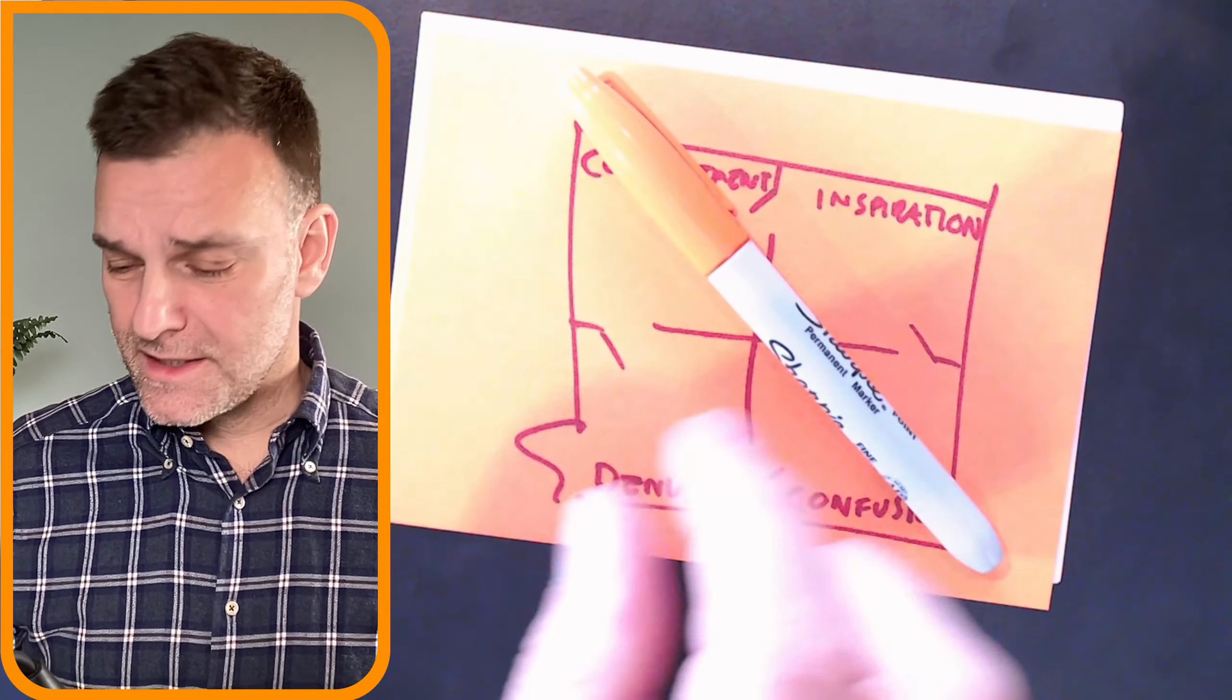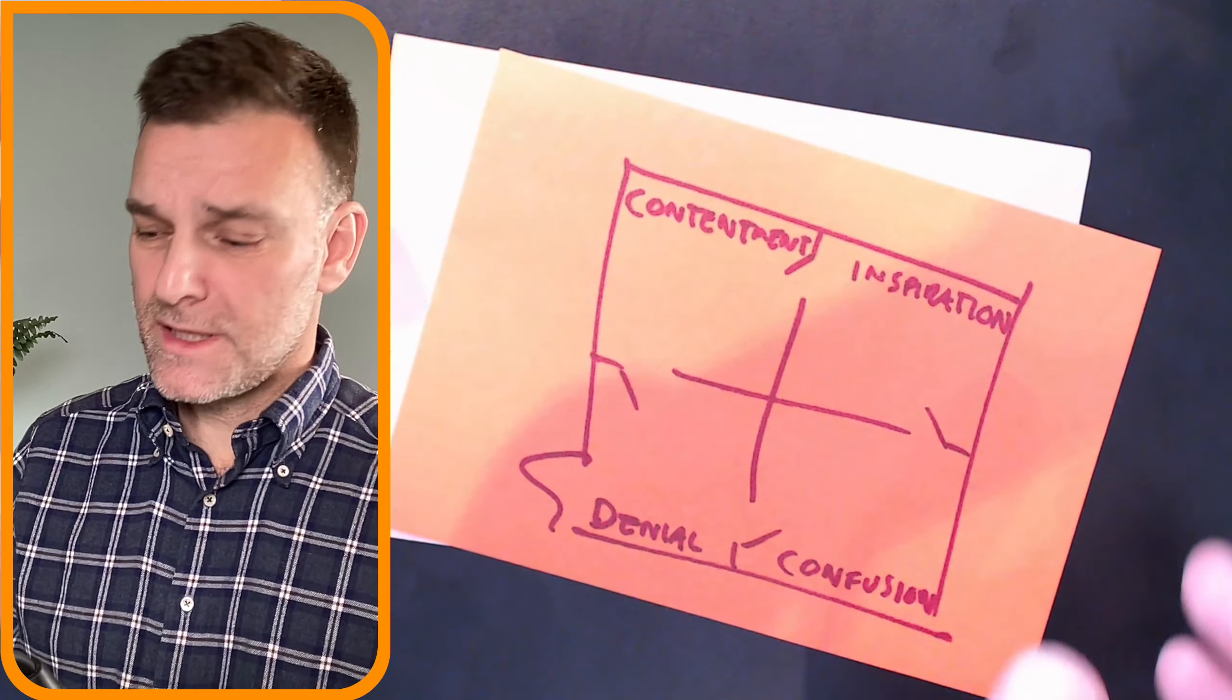Now, this model is super simple. It's called the Four Rooms of Change, or the Change House, and it's created by Klaus Janssen many years ago.